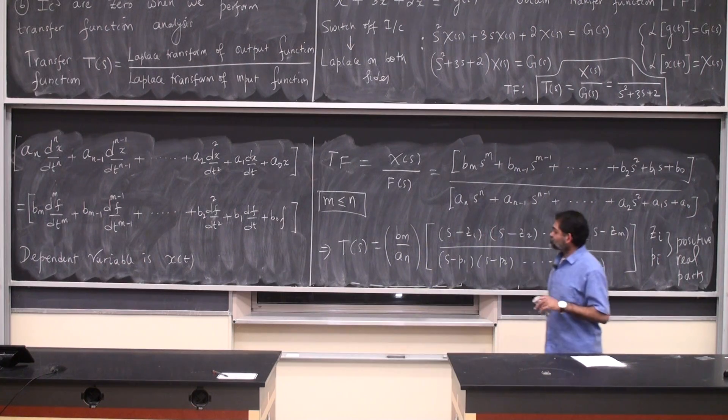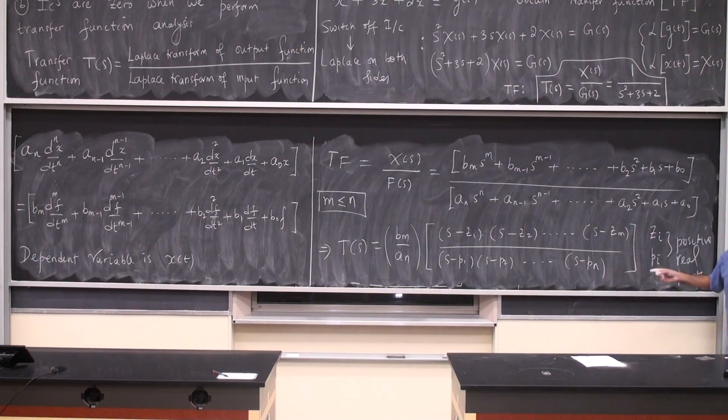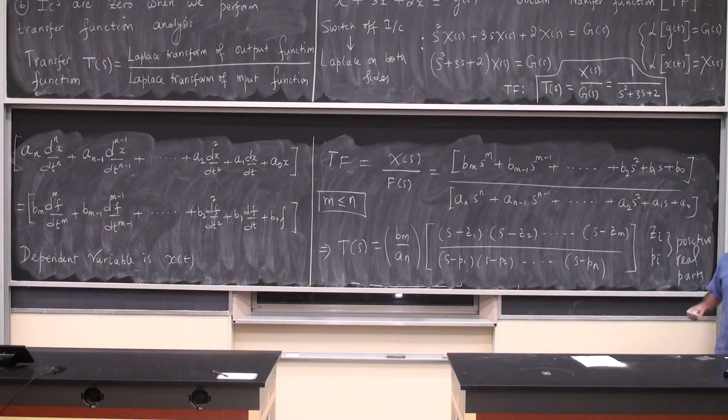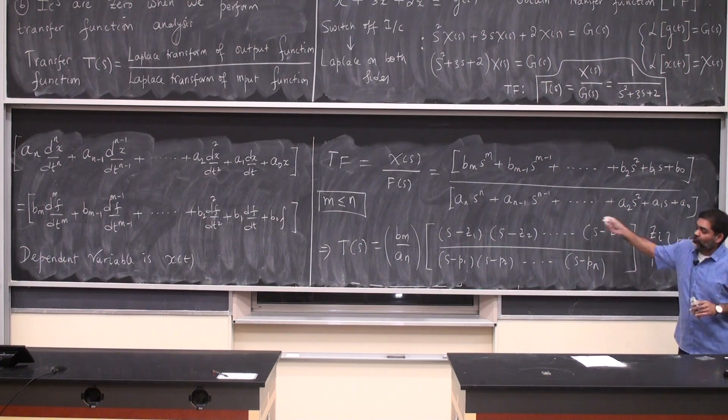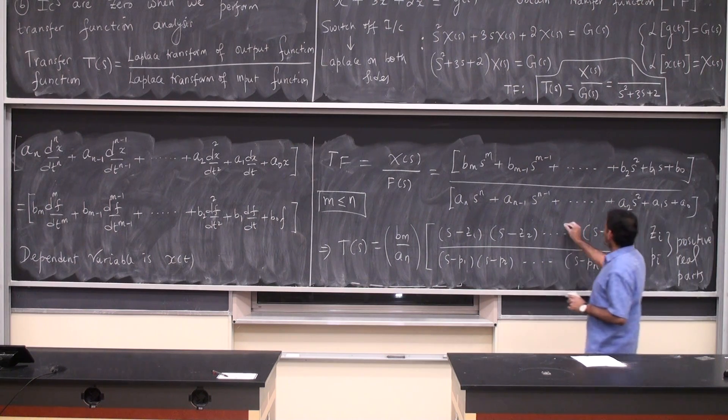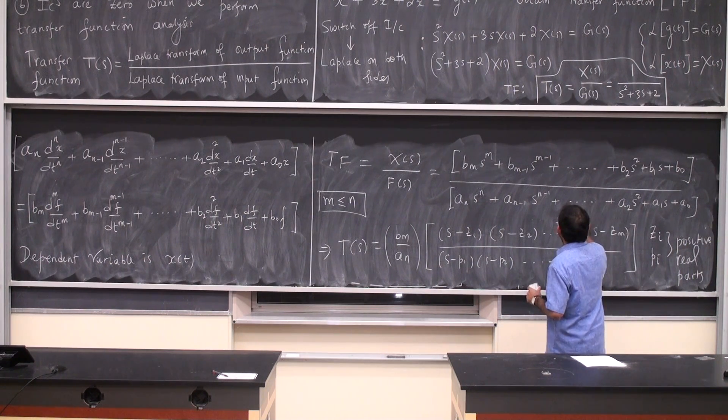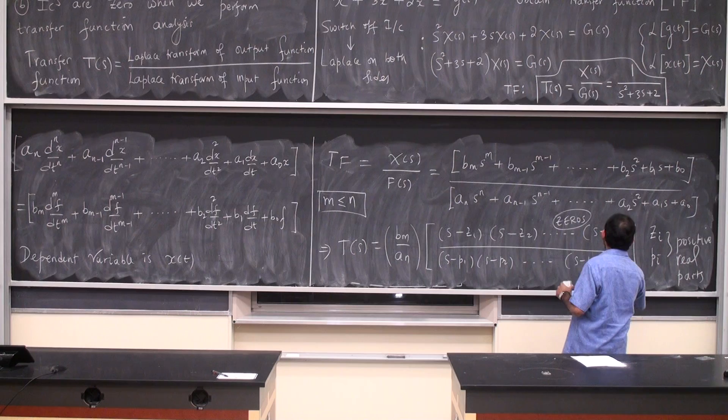This form is important because we are going to use this to plot what is called the pole-zero plot. The roots of the numerator are called the zeros, and the roots here are the poles.